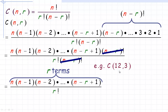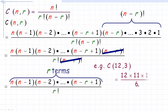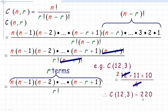For example, evaluating 12 choose 3: R is 3, so there are 3 numbers on top: 12, 11, 10. Divided by 3 factorial, which is 6. You can divide 6 into 12 to get 2, so this becomes 2 times 11 times 10, which is 220. So 12 choose 3 equals 220 — a way to evaluate that without full factorials.